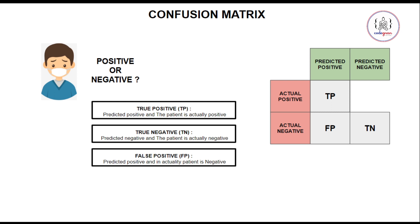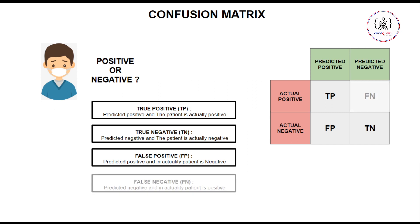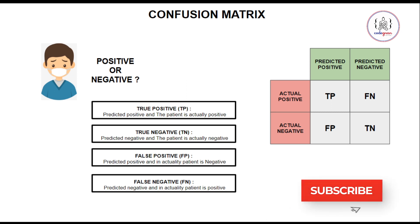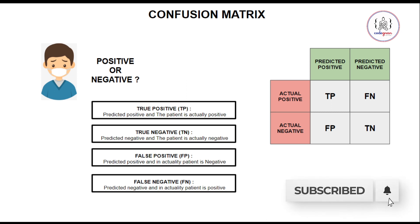Now what is false negative? False negative is when your model predicts that the person is going to test negative but in actuality the person is positive. That case is known as false negative. So we have now talked about all four terms.